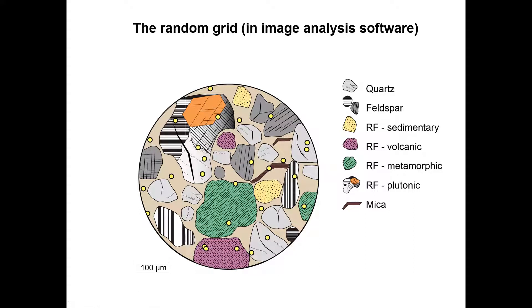Some image analysis software such as jmicrovision let you import a photo of the thin section and then create a random grid. Also this method might introduce grain size bias because larger grains are more likely to be counted multiple times.